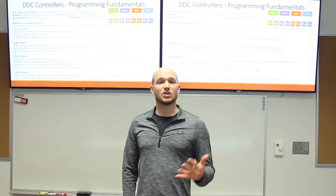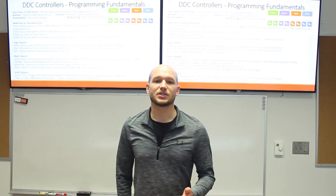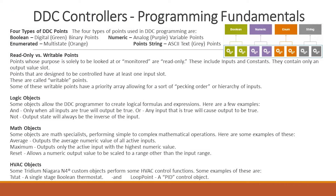You may remember this — we talked about the different types of points in DDC programming. You've got Boolean digital binary points, enumerated multi-state points in orange, numeric analog purple variable points, and then the point string — this is text, usually gray. These spell out some of the different objects or points: read-only versus writable points, logic objects, math objects, and HVAC objects.